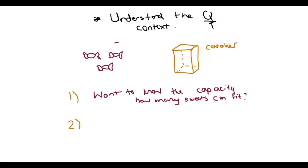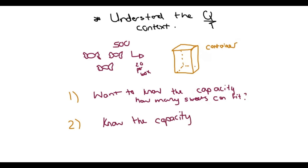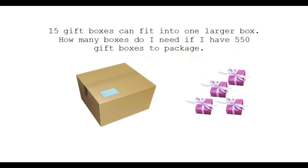The second instance is when they tell you: you have five hundred sweets and twenty can fit per box. Now you already know the capacity. The question becomes: how many containers do you need for five hundred sweets? Those are essentially the two types of questions.